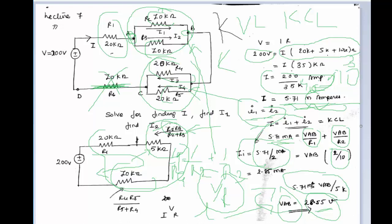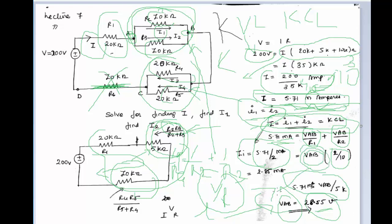This was a simple problem where we solved the circuit using series and parallel methods. First, we found the equivalent resistance for the parallel combinations, then applied Kirchhoff's Voltage Law to find the total current i. Based on that, we found branch currents i1 and i2 — either by equal current division when resistances are equal, or by applying KCL to find node voltage V_ab first.